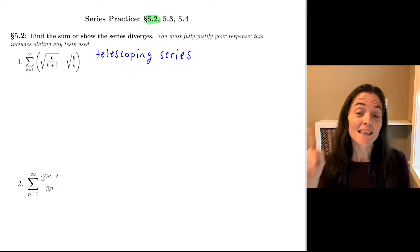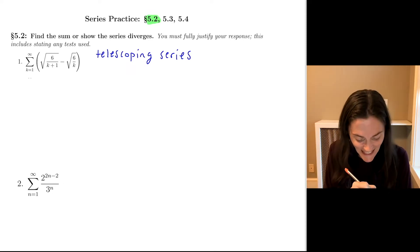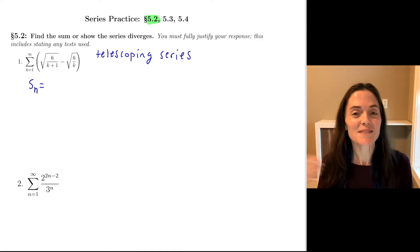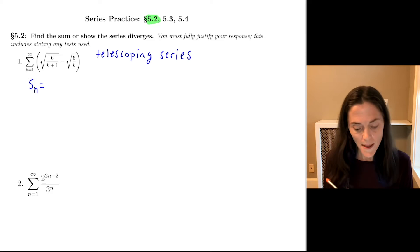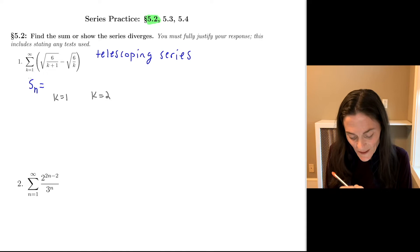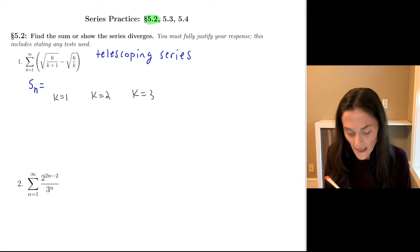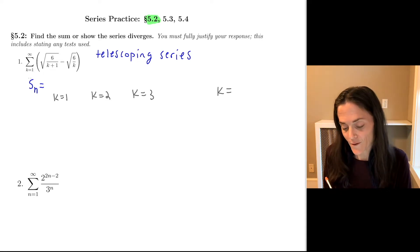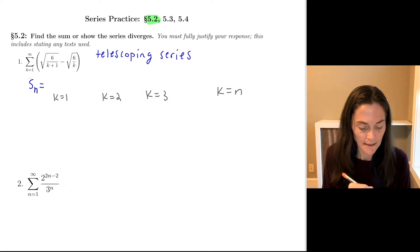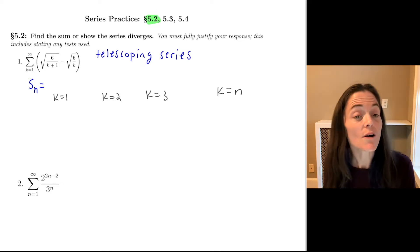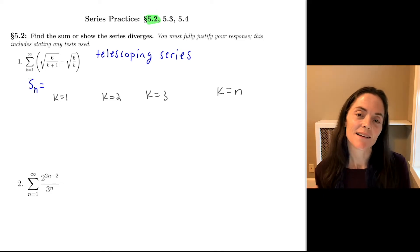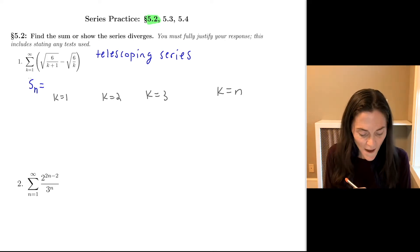Let's write out the nth partial sum, S_n, and simplify as much as we can. Let's do k=1, k=2, k=3, and then jump to k=n. Hopefully we will see what all cancels off. I won't simplify what's underneath the radical in my first step.